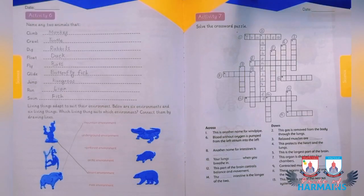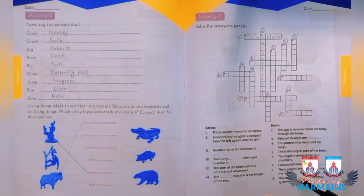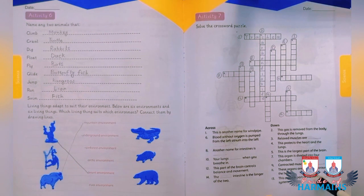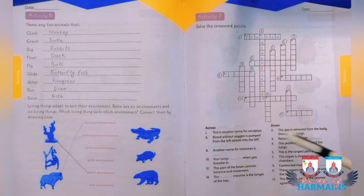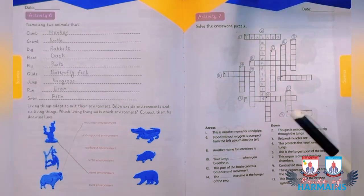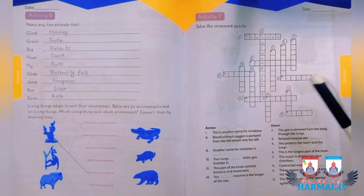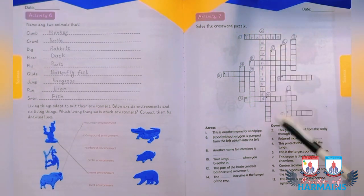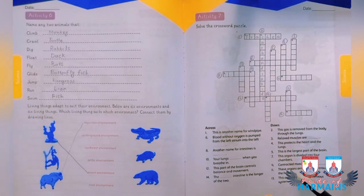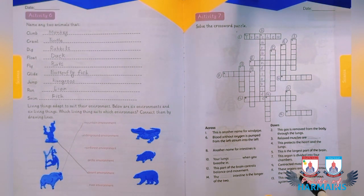Number seven from Class 4: here you have to solve a crossword puzzle. You have been given a few statements — you have to read and understand them, find the correct answer, and put it in the given boxes. Some boxes are in a horizontal position and others are in a vertical or downward position. I am going to solve a few of these for you and you have to solve the remaining parts.